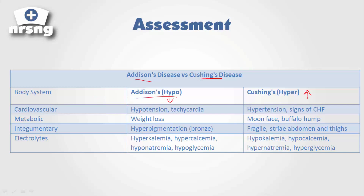With Addison's disease, in our cardiovascular system, we end up with hypotension and tachycardia. The patient is going to experience weight loss. They're going to have hyperpigmentation of their skin — kind of a bronzy color. As far as electrolytes go, they're going to have hyperkalemia, hypercalcemia, hyponatremia, and hypoglycemia. Since we're low on secretion of steroids, we're going to have hypoglycemia — where with Cushing's, we're going to have hyper.